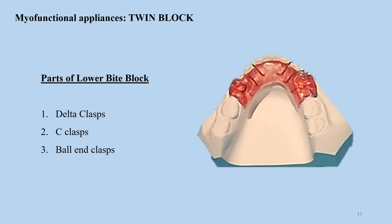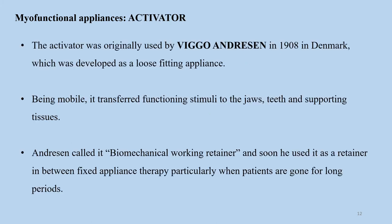The intermaxillary force is around 150 grams applied through the concord face bow — that is the orthopedic force application when using a twin block. With a twin block appliance, some amount of changes can be observed in the patient in a matter of eight to ten weeks.